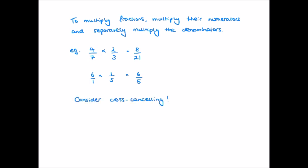There is a technique that can make more complicated multiplications simpler, called cross-cancelling. Consider three-tenths times five-sixths. We look diagonally across our sum for common factors. Ten and five are both divisible by five: five divided by five is one, ten divided by five is two. Then three and six are both divisible by three: three divided by three is one, six divided by three is two. We then multiply the numerators — one times one is one — and the denominators — two times two is four. So three-tenths times five-sixths equals one quarter.